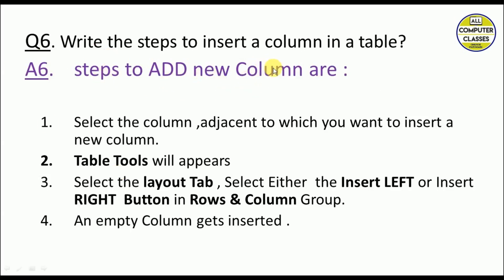Write the steps to insert a column in a table. Select the column adjacent to which you want to insert the new column — either right or left side. Table Tools will appear; click the Layout tab, then select Insert Left or Insert Right in the Row and Column group. An empty column gets inserted: if you choose Insert Left, a column is inserted on the left; if Insert Right, a column is inserted on the right.